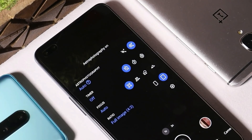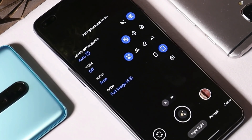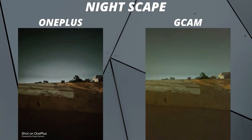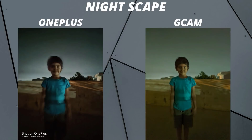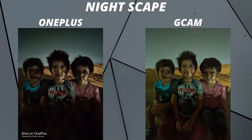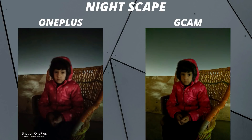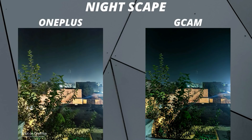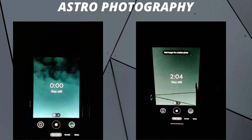Moving on to pictures clicked with Nightscape mode — in Google Camera 8.0 we get all features like astrophotography, timer, and more. Here are a few samples: when it comes to Nightscape photos, Google Camera just outperforms and we get clearer pictures with more details and less noise, where the OnePlus stock camera fails to focus on the subject in most cases. As for astrophotography, it doesn't work — I tried clicking pictures in astrophotography mode but after a long wait of around 30 minutes, the camera automatically closed. I tried several times but nothing worked out.